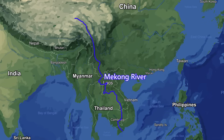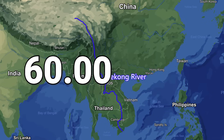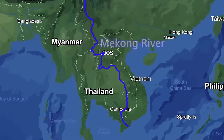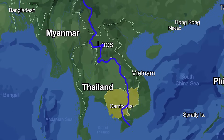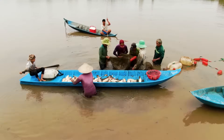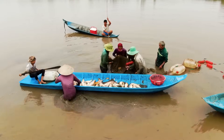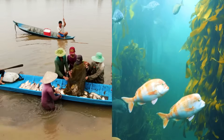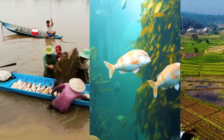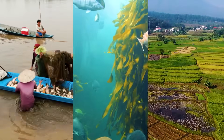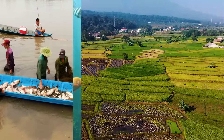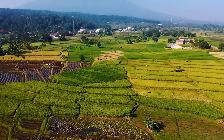The Mekong River is the foundation of the livelihood of over 60 million people living along its banks in the lower Mekong Basin countries of Thailand, Laos, Cambodia, and Vietnam. It supplies 25% of the world's freshwater fishery, boasts the second most biodiverse fish habitat in the world after the Amazon River, and the sediments flowing down the Mekong are the fuel for agriculture in Asia's rice bowl, one of the most productive regions in the world.